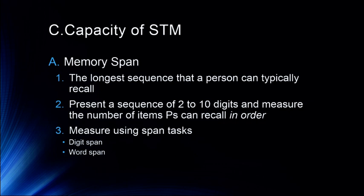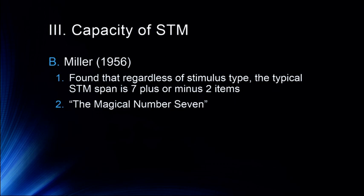There are various span tasks: digit span, word span, and letter span. When we get to working memory, we'll also discuss reverse digit span and the operation span task, which is a particularly important measure of working memory capacity. In these classic span tasks, participants simply remember digits or letters in order, and the capacity is reliably found to be 7 plus or minus 2 — the reason phone numbers were designed to be 7 digits back when people actually had to remember them.